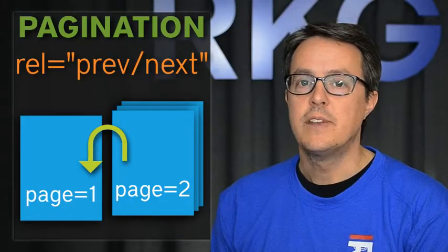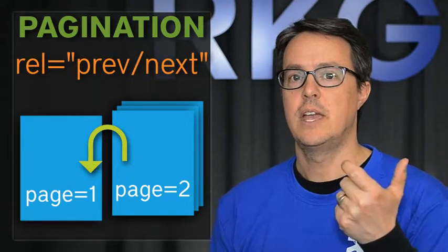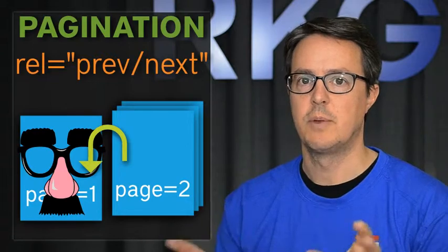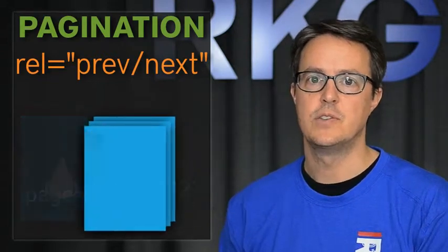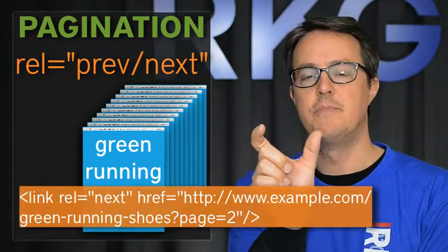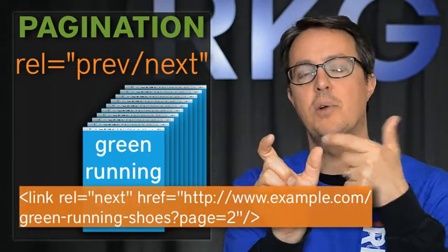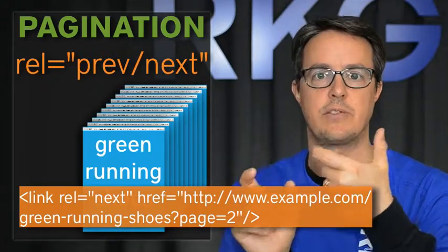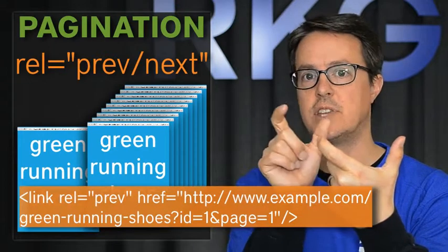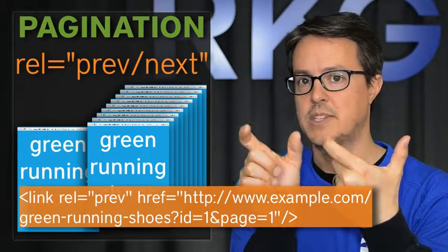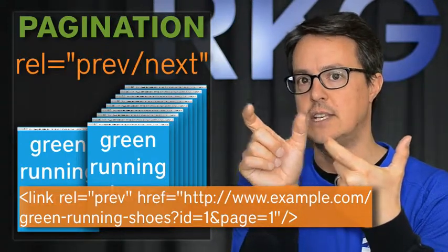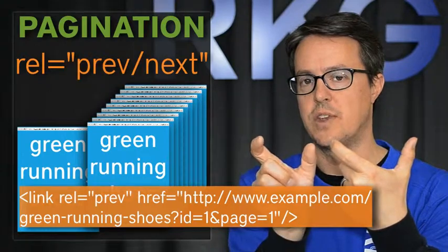The first one is rel-prev-next being used where the second page actually references a different version of the first page. So basically what happens is you've got a category — say it's green running shoes and it's got 10 pages. Page one starts out with rel-next; there's no prev because it's page one, and rel-next references page two. Page two then has a rel-prev referencing page one, but not the same page one that actually got linked on the site and started the whole series — referencing a different page one instead of the page one that it should.